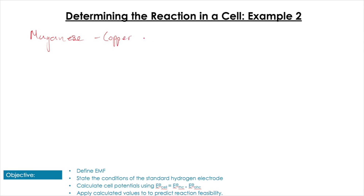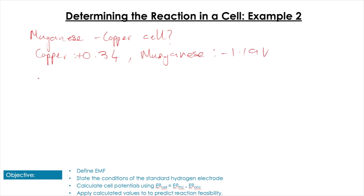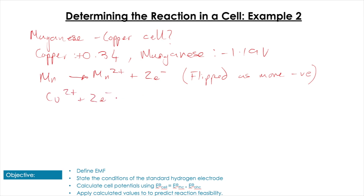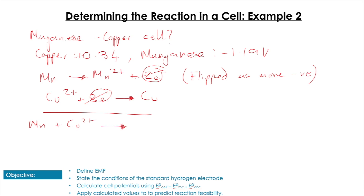Looking at a manganese-copper cell: manganese has the more negative value so it is oxidized - it flips direction and loses electrons. Copper goes from Cu²⁺, gains two electrons, and forms copper solid. These are already balanced in terms of electrons, so we just add the two equations together to get the overall redox reaction for the cell. There's no difference between this skill and the other redox equations we've already been doing.